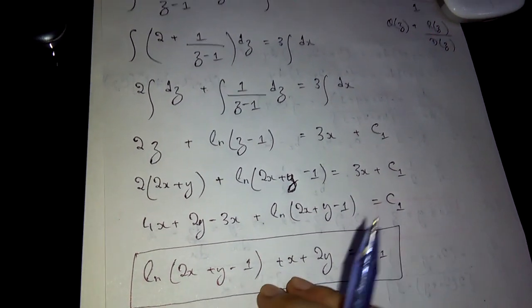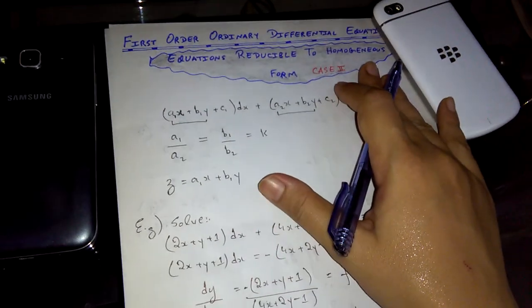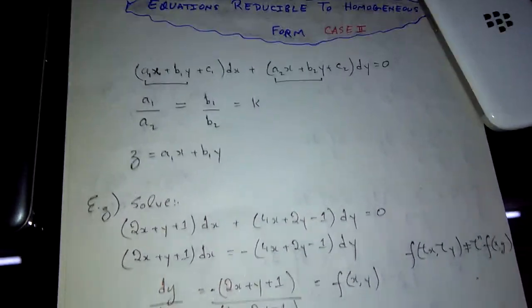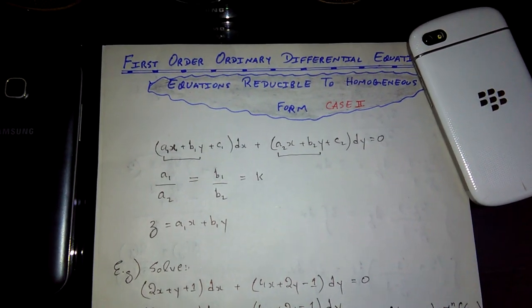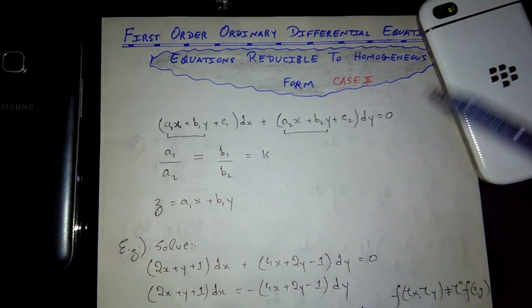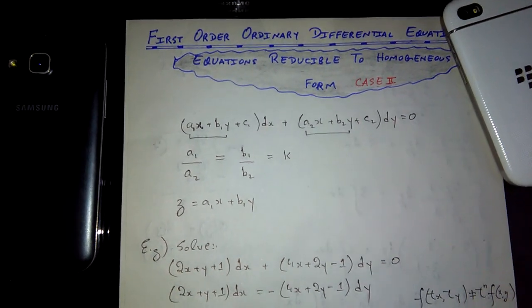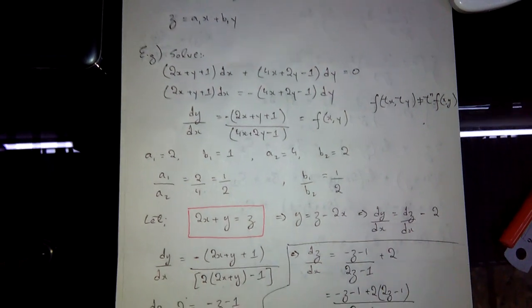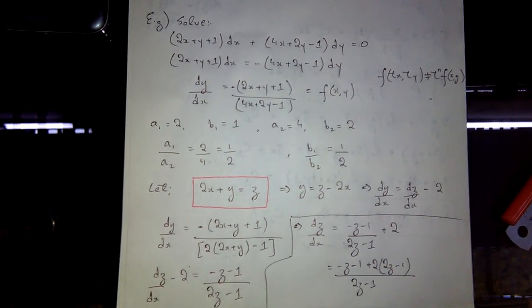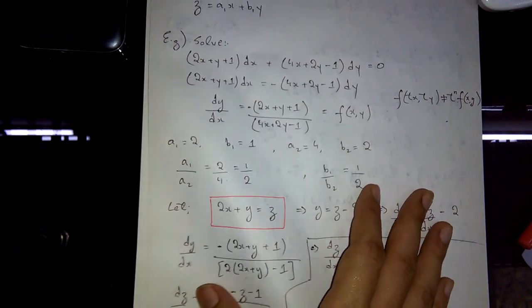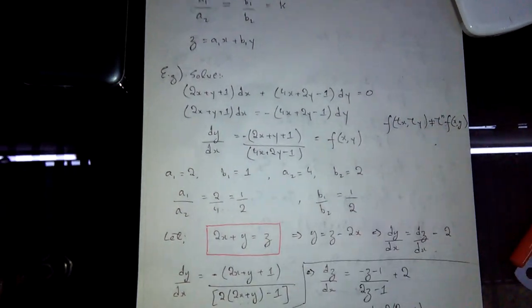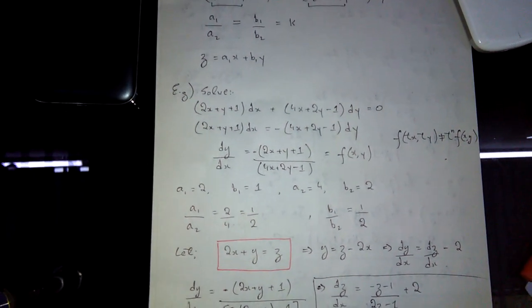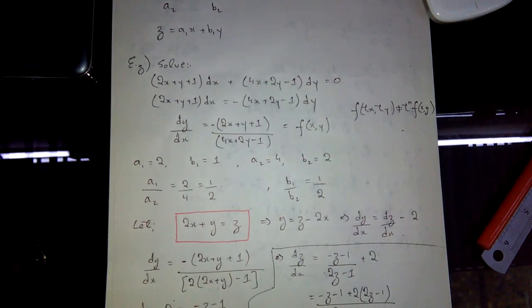That's the solution of the non-homogeneous first-order ODE for Case 2. I hope you have now understood how to reduce a non-homogeneous differential equation to a homogeneous form in Case 2. If you find this video helpful, please subscribe to my channel, hit like, and share with your friends and other learners. Don't forget to watch the other videos in the series. Take good care of yourself. Allah Hafiz.